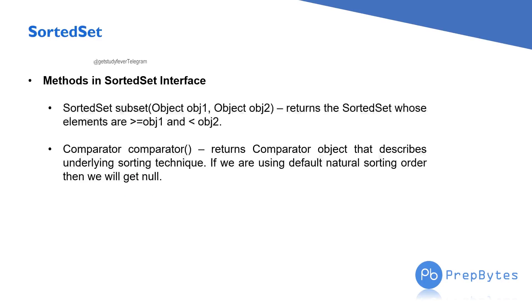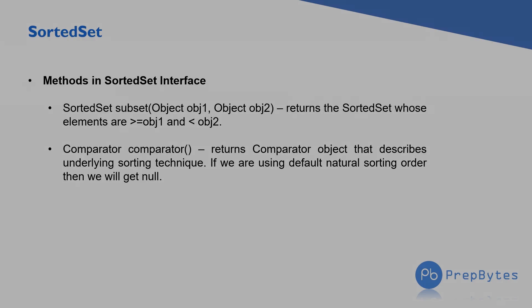So these are the methods of SortedSet interface. These methods are implemented by TreeSet, which is the implementation class for the SortedSet interface. Next we will see TreeSet and after that we will see NavigableSet.